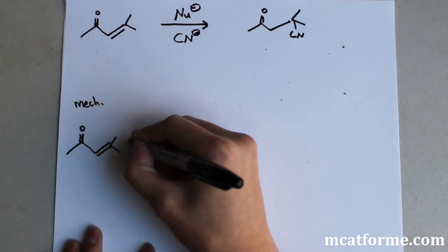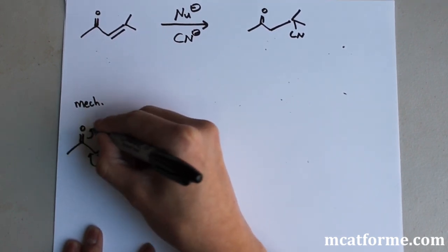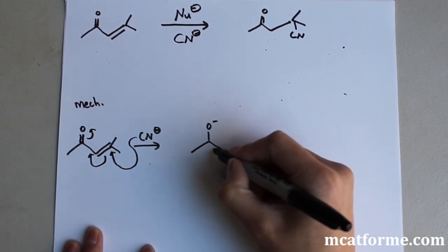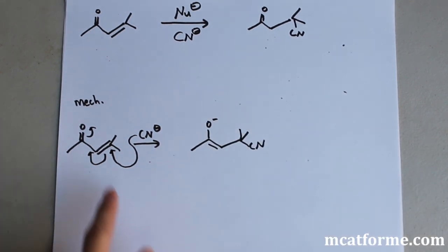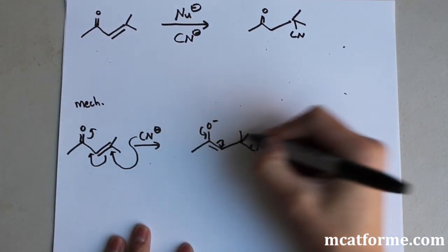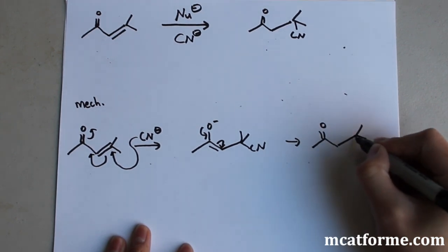Again, this is a very simplified mechanism. So this CN- is going to come react like this, push everything up, make it like this. So all we did is move the double bond over and pop that double bond up and it's just going to react down again. And our final product is going to be like we saw above.